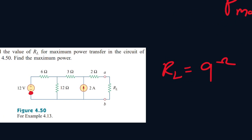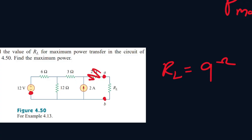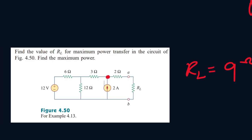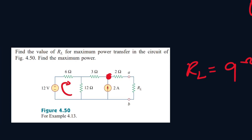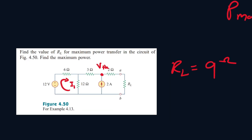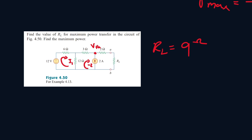To find VTH, we get rid of the RL portion of the circuit, leaving an open wire at terminals A and B. Since it's an open wire, all current passing through there will be zero, so we can ignore that resistor. We call the mesh current I1, and this region has a current of negative 2 amps because it's moving in the opposite direction.